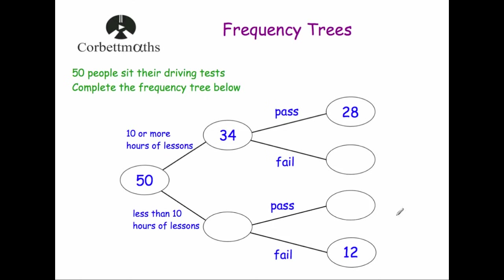Here's a frequency tree. It says 50 people sit their driving tests — complete the frequency tree below. We're collecting two different bits of information: first, how many hours of driving lessons were taken, whether it was 10 or more or less than 10 hours, and then whether the person passed or failed the driving test.